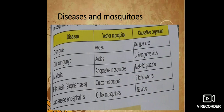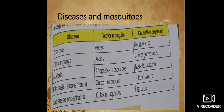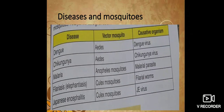Now let's identify which diseases are caused by different types of mosquitoes. Dengue and Chikungunya are caused by Aedes mosquitoes, with the causative organisms being Dengue virus and Chikungunya virus respectively. Malaria is transmitted by the Anopheles mosquito and is caused by the Malarial Parasite.